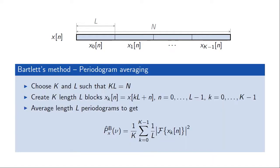In Bartlett's method, you choose indices K and L so that K times L is equal to or less than the number of samples. You then create K blocks of length L from the original data, compute a periodogram estimate for each block, and average these to get your final power spectral density estimate. The idea is that this estimate will have a lower variance than computing the periodogram for the entire data block, since that would involve no averaging at all.